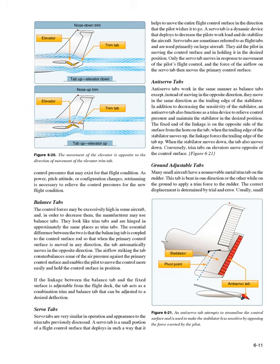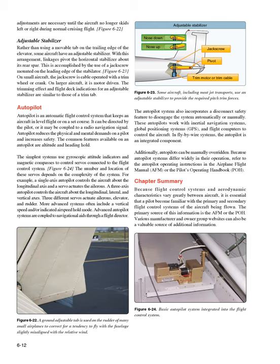Many small aircraft have a non-movable metal trim tab on the rudder—a ground adjustable tab bent in one direction or the other on the ground to apply a trim force. The correct displacement is determined by trial and error until the aircraft no longer skids left or right during normal cruising flight. Some aircraft use an adjustable stabilizer instead of a trim tab: linkages pivot the horizontal stabilizer about its rear spar via a jack screw on the leading edge—cable-operated on small aircraft with a trim wheel or crank, and motor-driven on larger aircraft. The trimming effect and flight deck indications are similar to those of a trim tab.